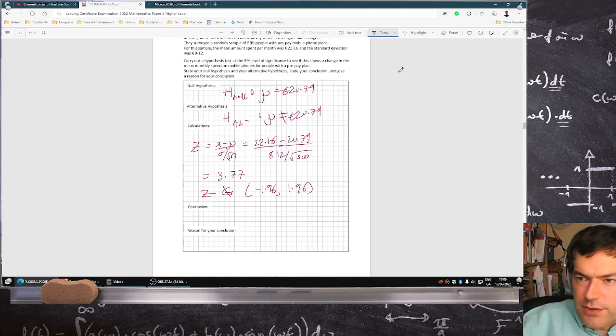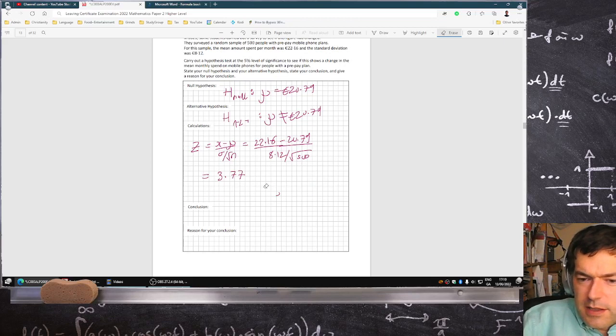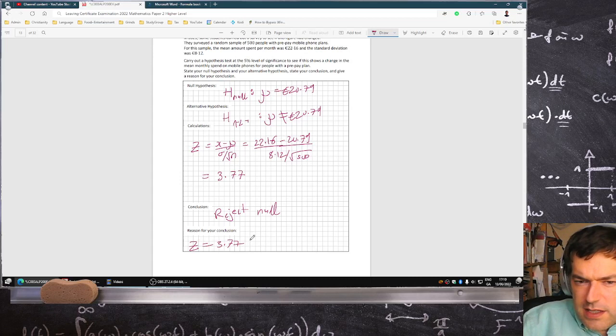For the reason for the conclusion, it's kind of in a weird order. But the conclusion is you reject the null. And the reason is that z equals 3.77 is not in the interval minus 1.96 to 1.96.